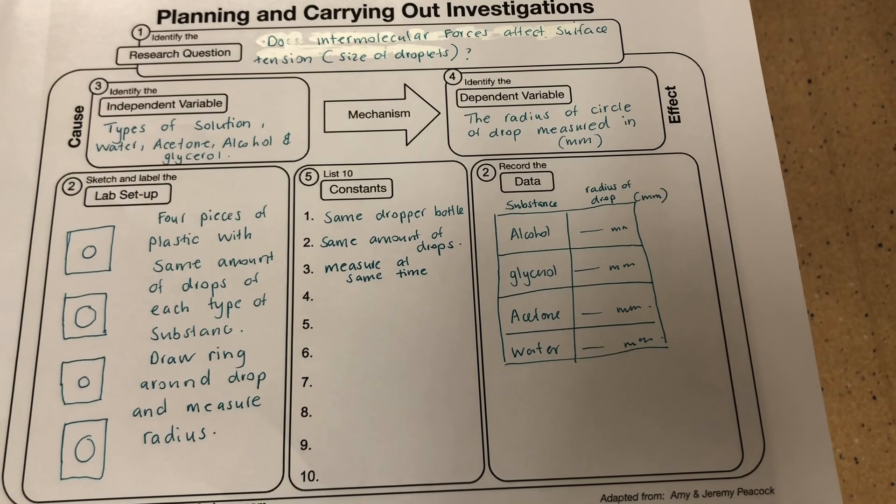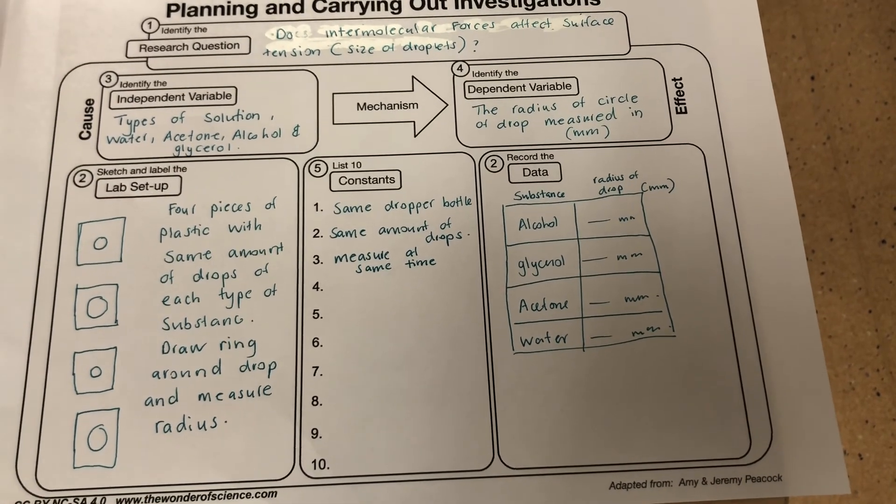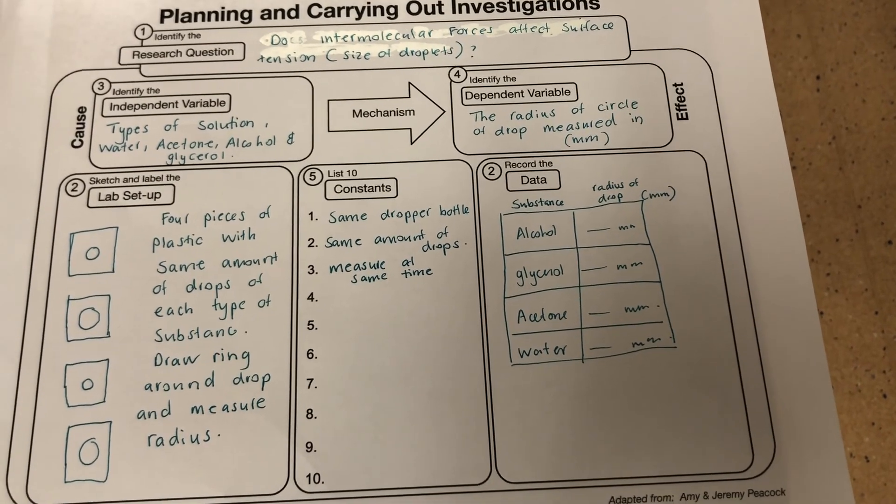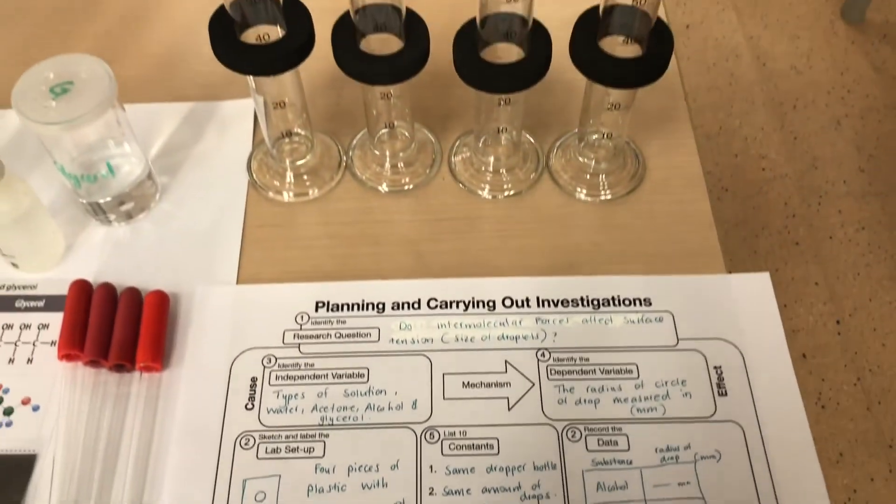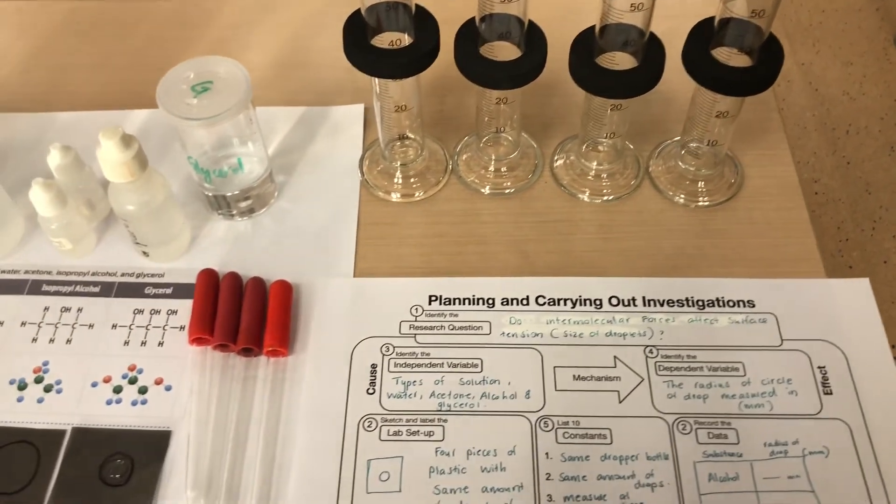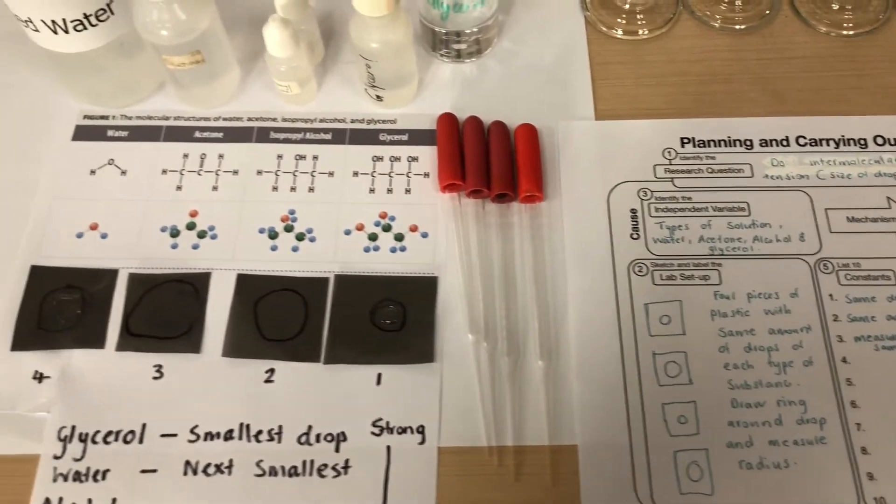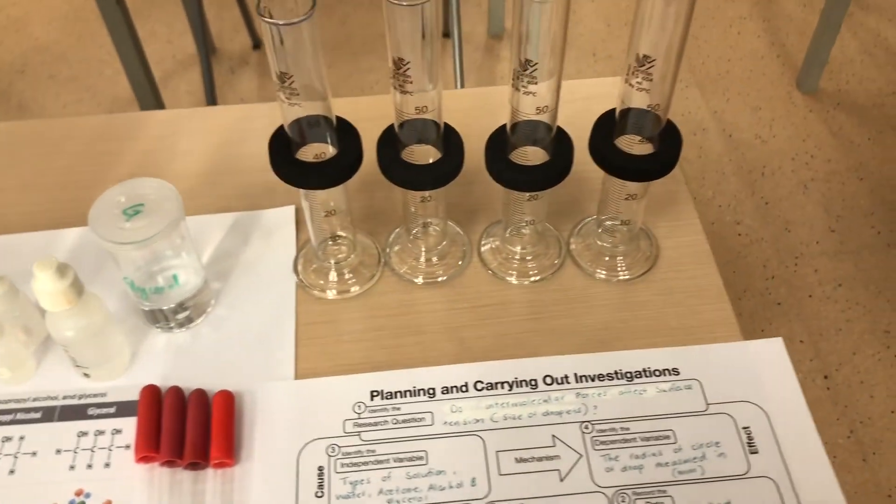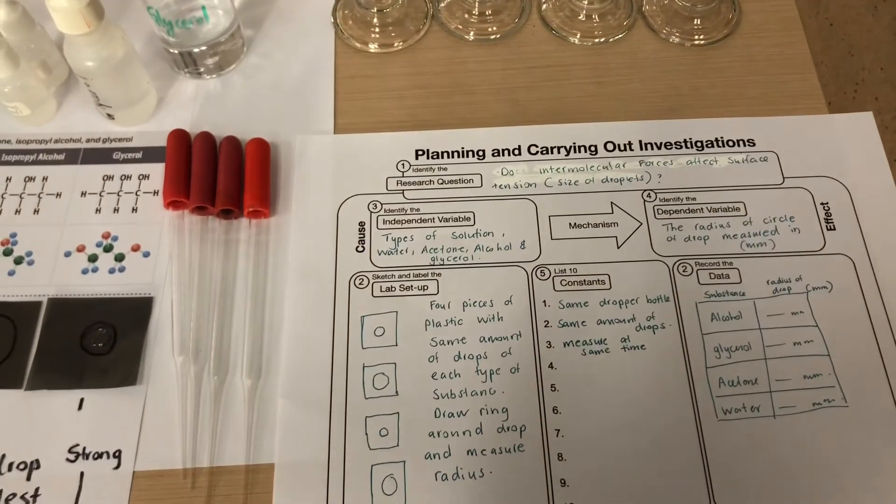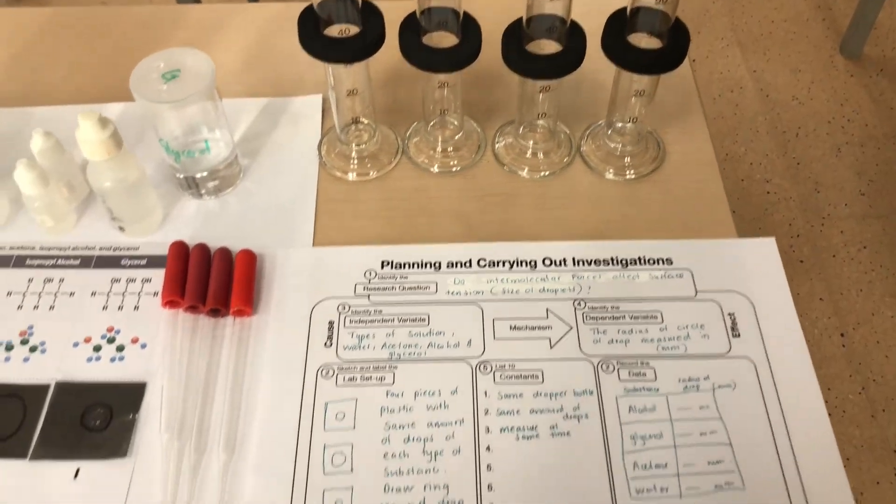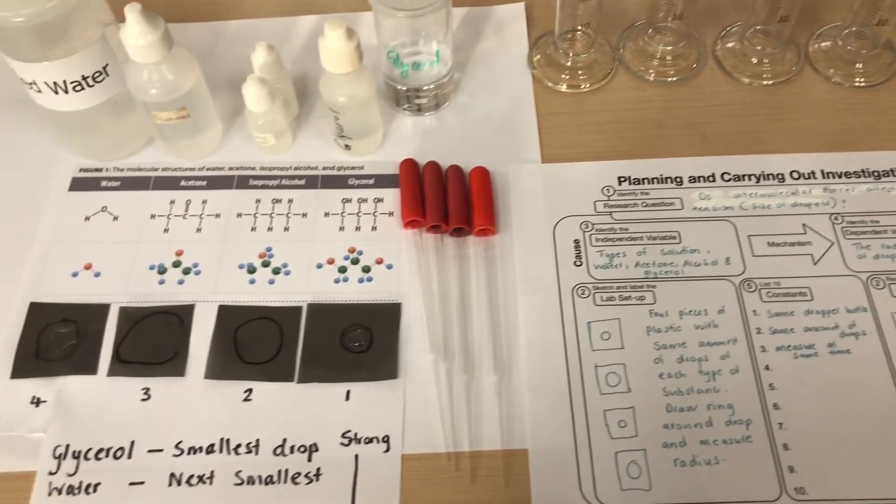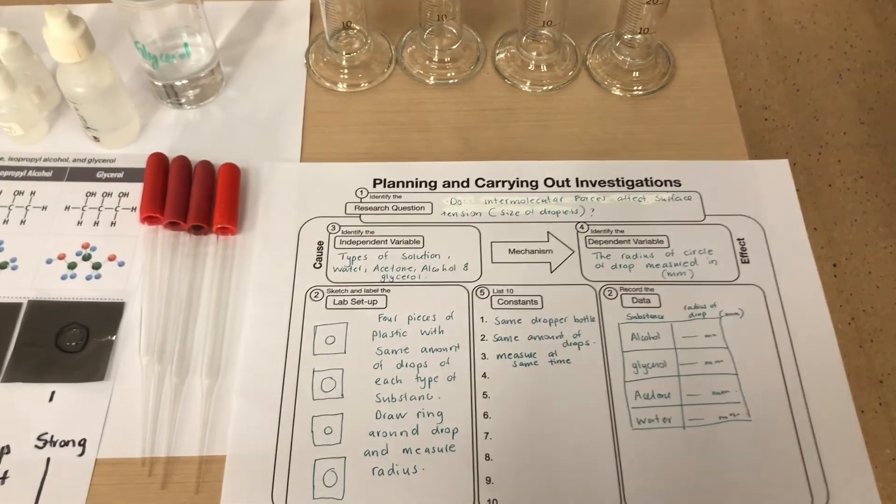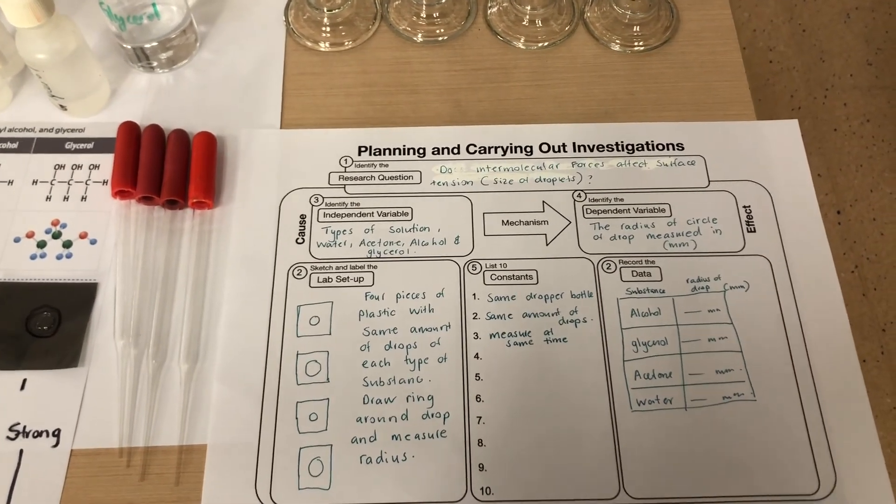That's what you're going to do for me today. You're going to have to think about how you're going to set the experiment up. You're going to use the same substances that are used for surface tension. You're going to have to think of some things that you're going to need to keep the same to keep it a fair test, and how you're actually going to record your data. You can use the equipment that you can see here on my table. There's plastic film, there's measuring cylinders, and there's also droppers. I want you to think about how you can plan and carry out an investigation for looking at the concept of linking evaporation and intermolecular forces together.